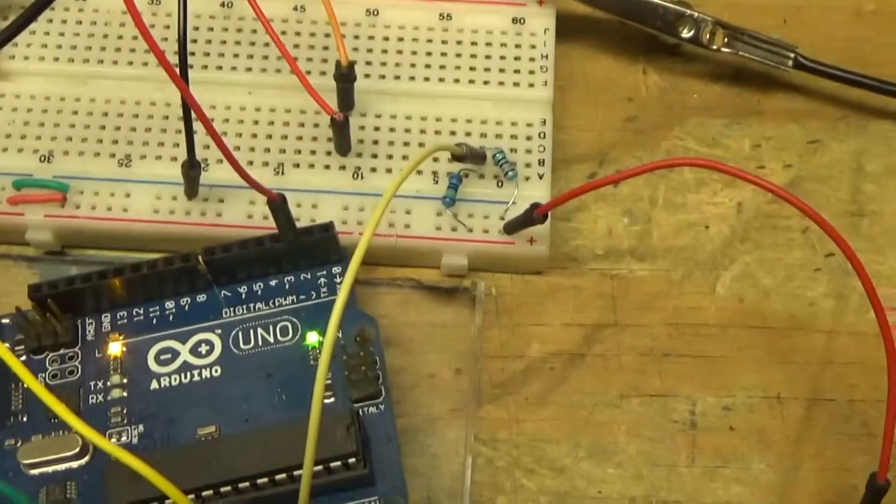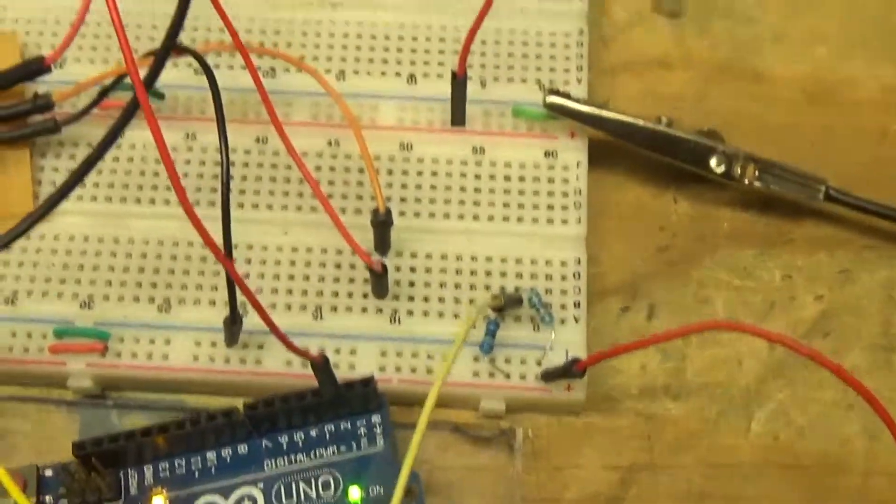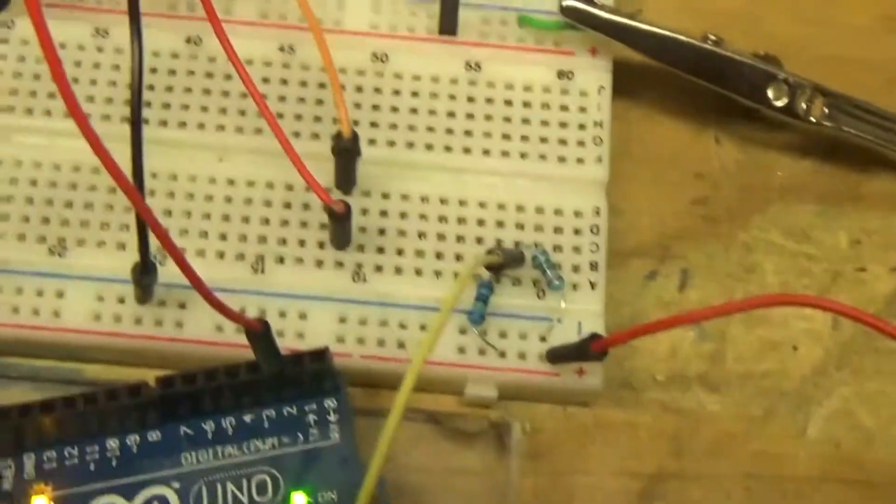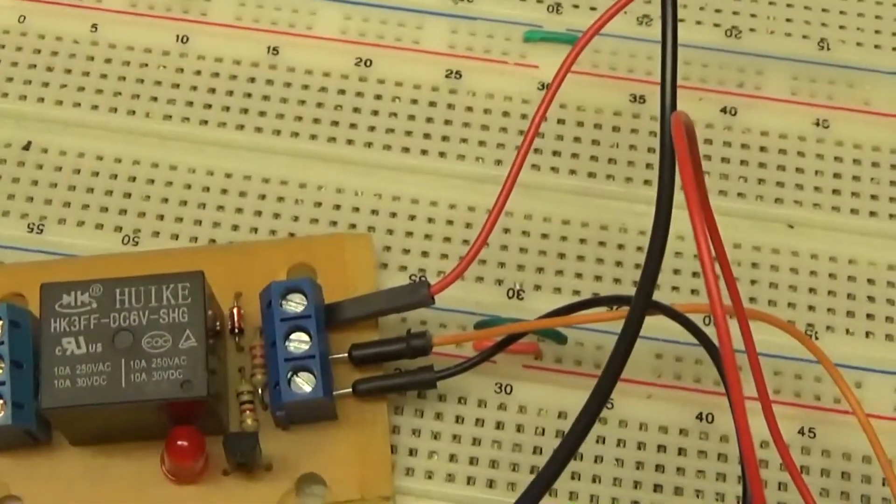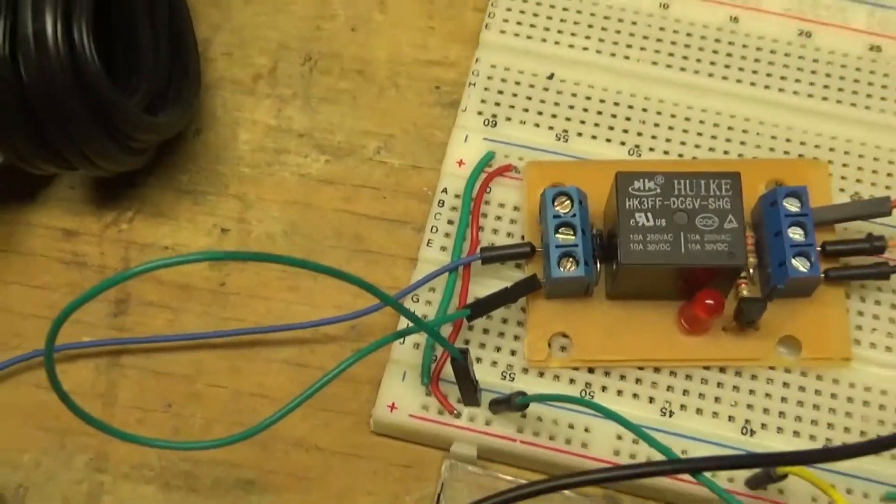When it reaches 12 volts then I turn the relay on and it stays on until 6.5 volts. Over here in digital line 2, that orange wire is a sense pin on this relay.